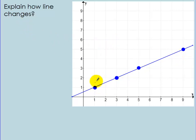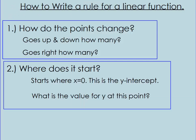When we did that in class, sometimes you'd say: the dots are going to the right 2 and going up 1. That's a good thing to recognize, and that's what we need to do to write the equation or rule for a linear function. The first thing you want to answer is: how do the points change? How many units does it go up or down, and how many does it go to the right?